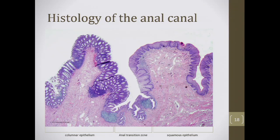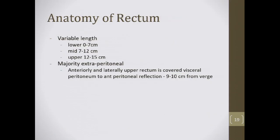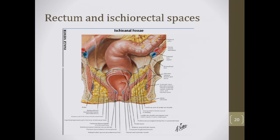It's worth being familiar with normal histology slides — you may see something like this on the test, and being able to differentiate columnar from squamous epithelium is worthwhile. The rectum is a variable-length organ: lower third 0–7 cm, middle 7–12 cm, upper 12–15 cm (alternate definitions also used). The majority of the rectum is extraperitoneal; the anterior and lateral upper rectum is covered by visceral peritoneum down to the anterior peritoneal reflection at about 9–10 cm from the anal verge — a key recurring anatomic landmark.